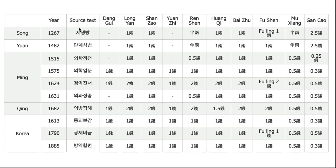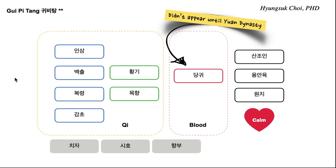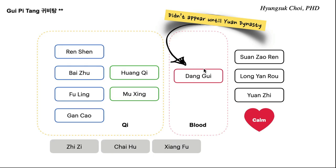In the Song dynasty, this formula did not have danggui inside — there was no danggui. In the Yuan dynasty, there was no danggui either. About 500 years later, a doctor in the Ming dynasty put danggui into Guipi Tang. Originally, danggui had not been part of Guipi Tang.